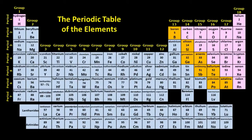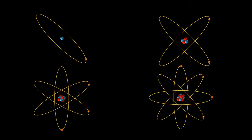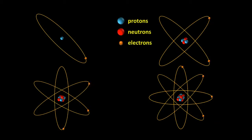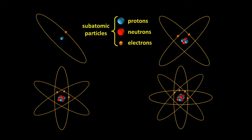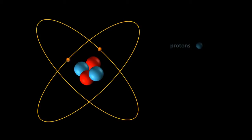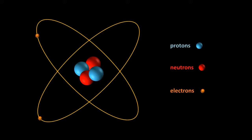Even though there are more than 100 elements, the atoms of every single one of them are made up of just three types of particles, which are often called subatomic particles. Different atoms have different numbers of these three subatomic particles. This atom has two protons and two neutrons in its nucleus and two electrons moving around the nucleus — it is in fact a helium atom, or rather a representation of a helium atom.